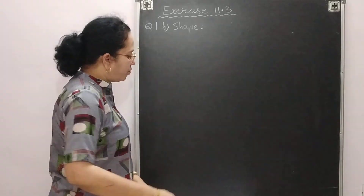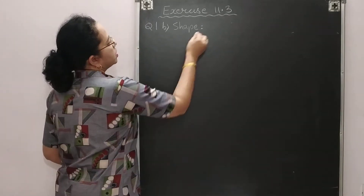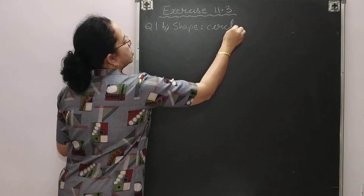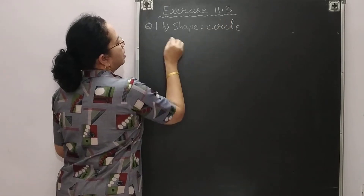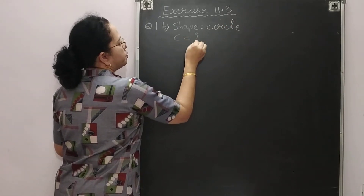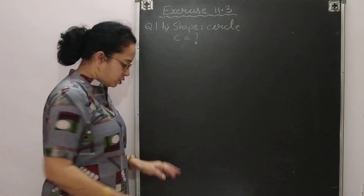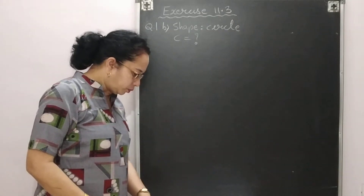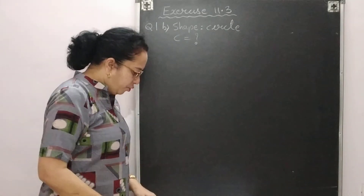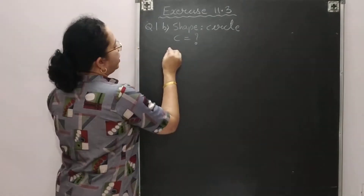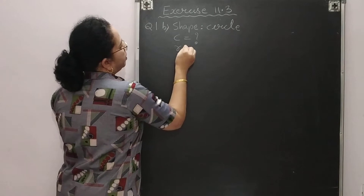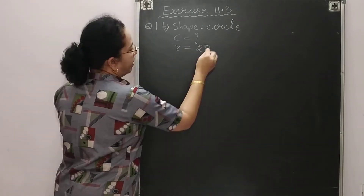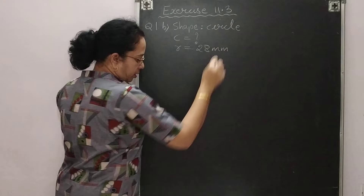Question 1B: Find the circumference of a circle. The given shape is a circle, and circumference is what we need to find. The radius is 28 millimeter.